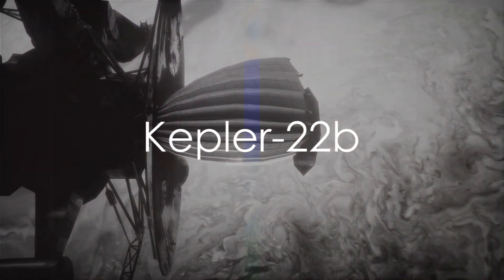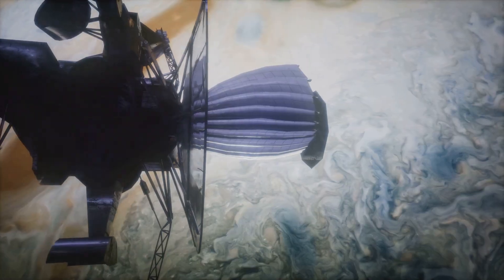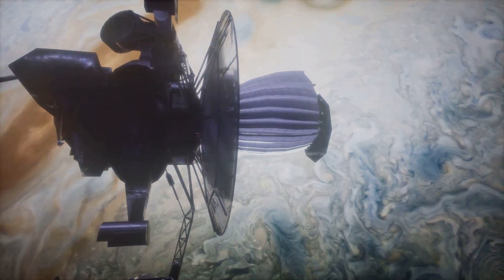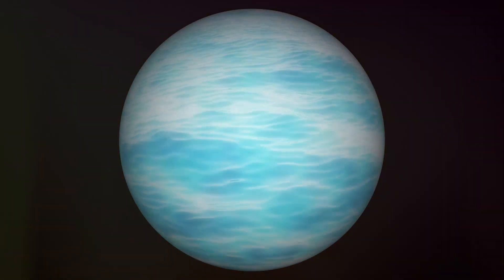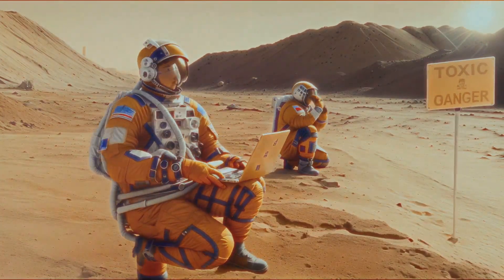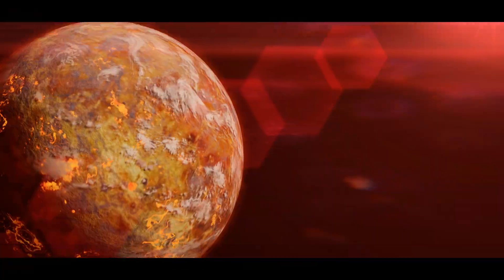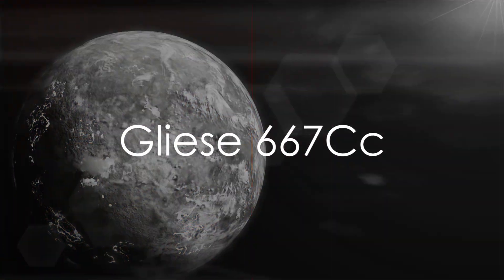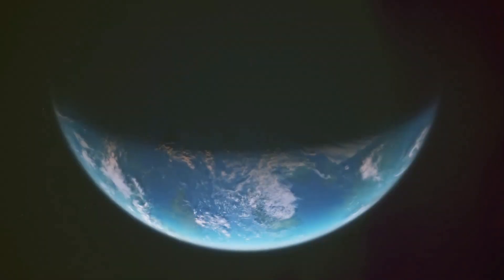Starting at number 10, we have Kepler 22b, a planet located about 600 light years away from us. Its surface is potentially covered by oceans and it orbits within the habitable zone of its star, where conditions might just be right for life as we know it. Next at number nine, we find ourselves at Gliese 667 cc.